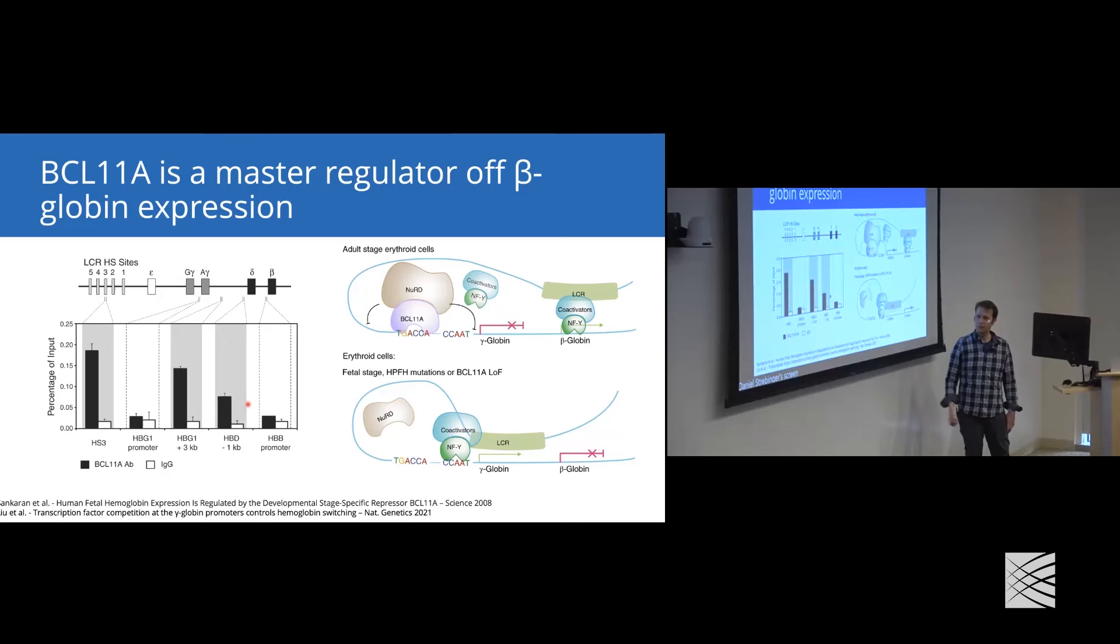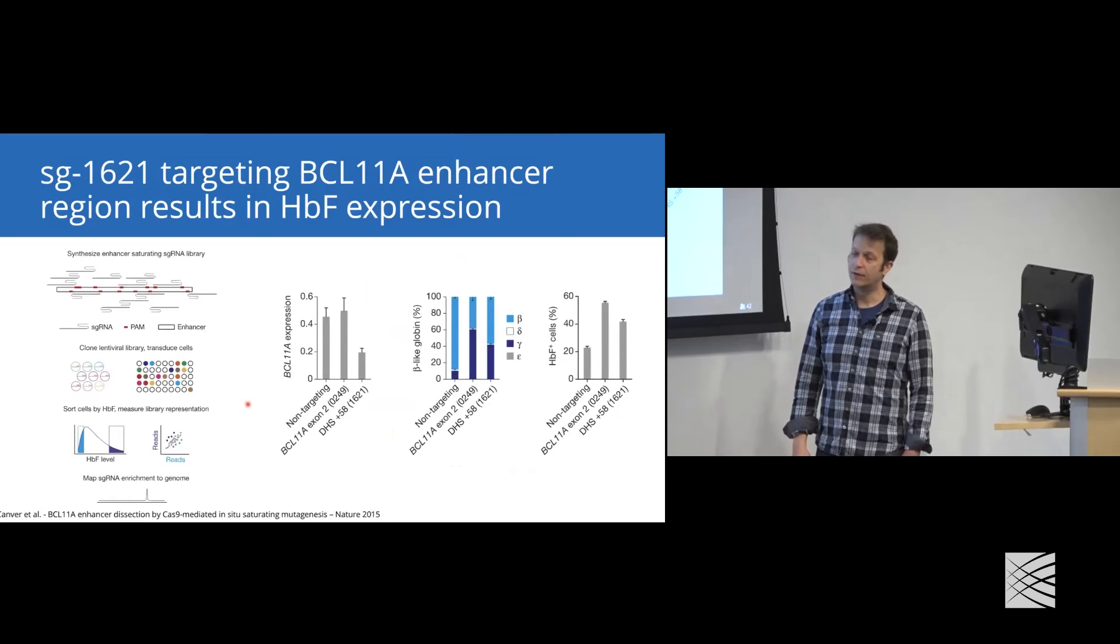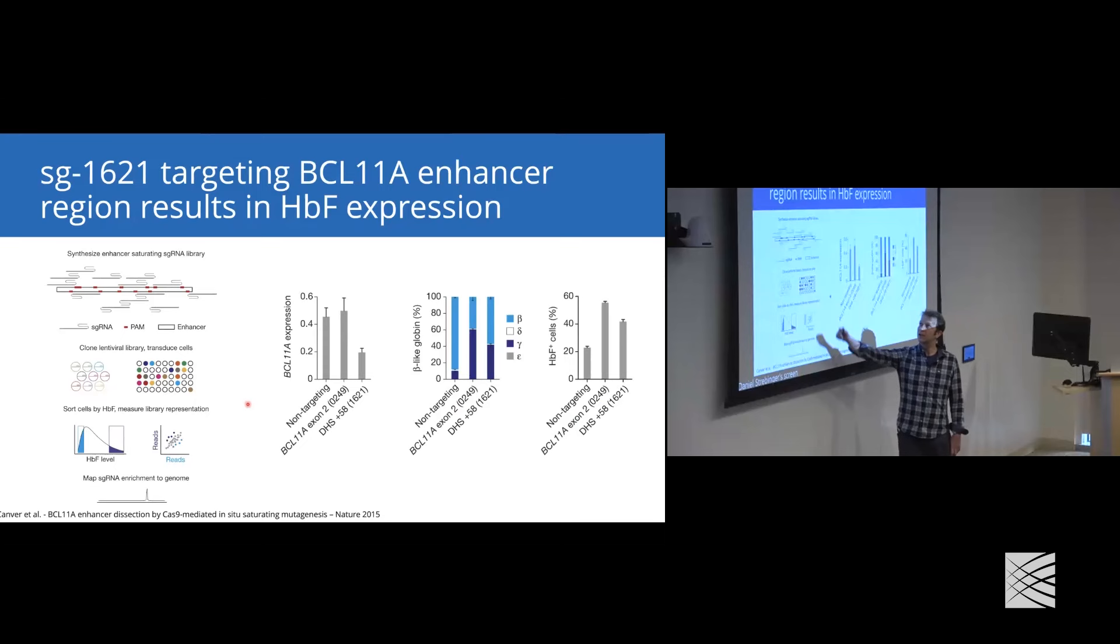One idea we could have to address hemoglobinopathies and sickle cell disease is what if we reactivate the gamma-globin gene? To do that using CRISPR, we can try to figure out which guide RNAs would allow us to specifically repress BCL11A in erythrocytes. We don't necessarily want to destroy BCL11A in hematopoietic stem cells, but we could try to figure out where BCL11A needs to bind. What region of the BCL11A enhancer is important for BCL11A expression in red blood cells?